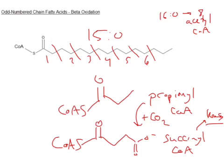So now we have to talk about how we do that. We're going to do six rounds of beta oxidation, and then we're going to have to go into a special feeder reaction that'll help convert propionyl-CoA to succinyl-CoA. It's actually two steps, two different enzymes that do this, and we'll talk about that in the next slide.